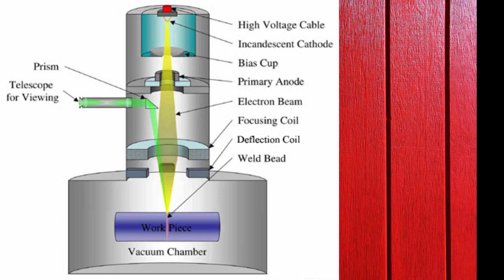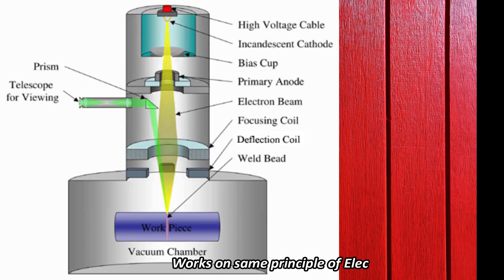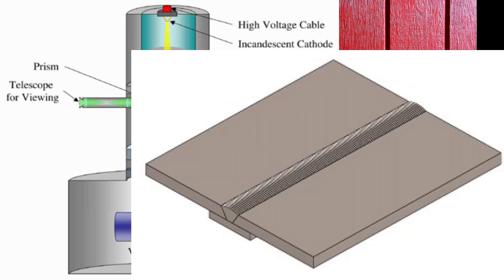This whole process is carried out in vacuum, otherwise the electrons collide with air particles and lose their energy. This welding works on the same principle of electron beam machining. This process uses kinetic energy of electrons to produce heat, which is further used to weld two welding plates.